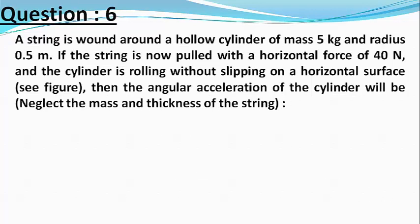a string is wound around a hollow cylinder of mass 5 kg and of radius 0.5 meters. If the string is now pulled with a horizontal force of 40 Newton and the cylinder is rolling without slipping